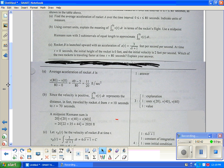Last part. Rocket B is launched upward with an acceleration of A of T equals three over the square root of T plus one feet per second per second. At time T equals zero, the initial height of the rocket is zero feet, so launched from the ground.